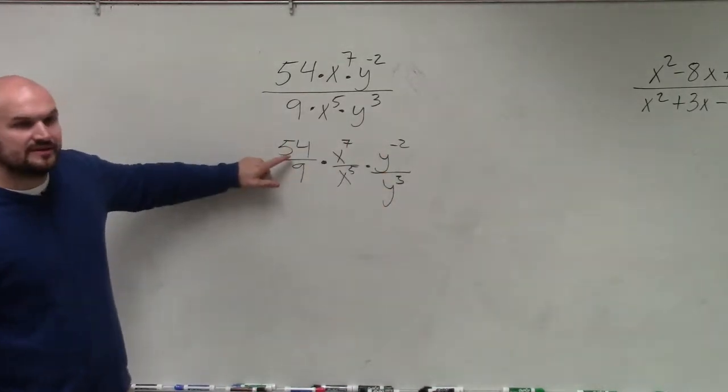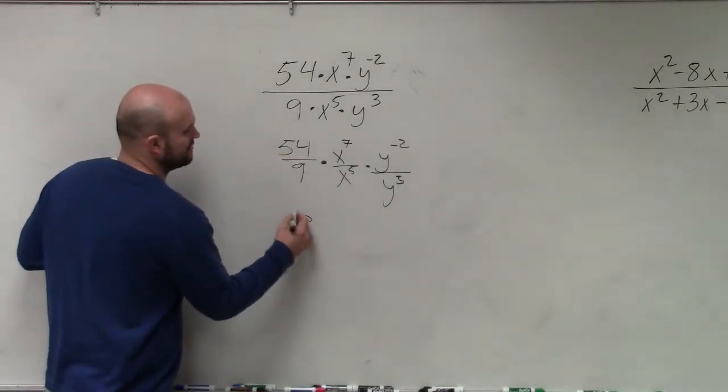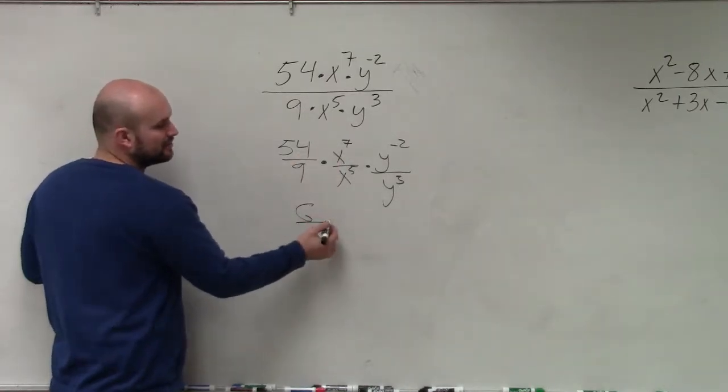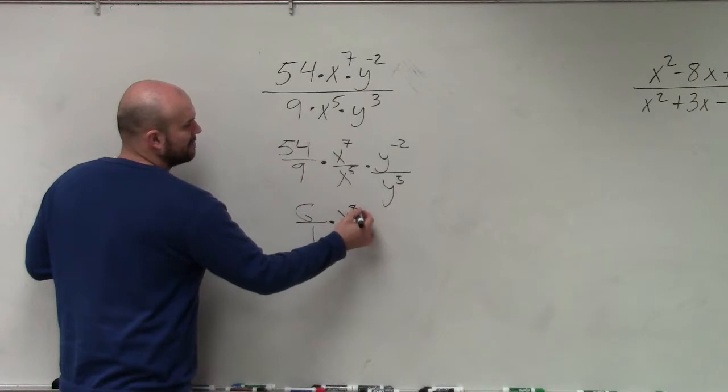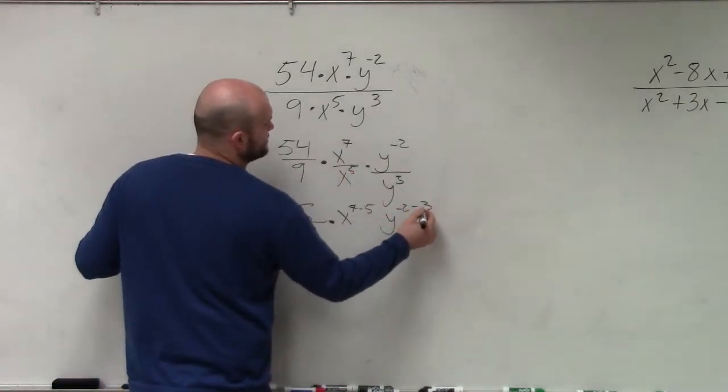Well, 9 divides into 54 six times, actually. So we can simplify this to 6 over 1. x to the seventh, you guys remember, by using the rules of exponents, you subtract the power. So that's 7 minus 5. And here, it's going to be y to the negative second minus 3.